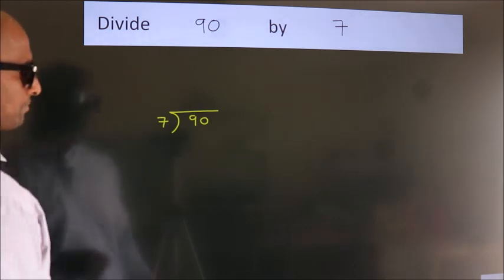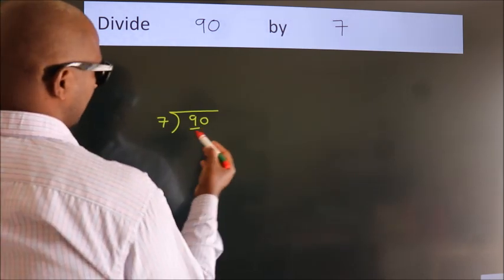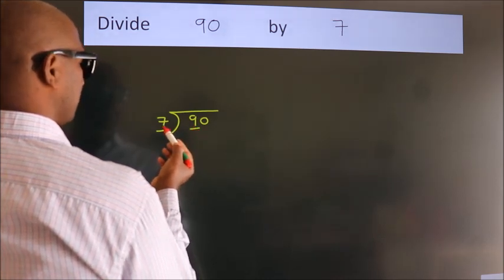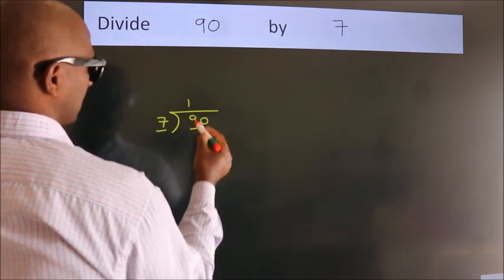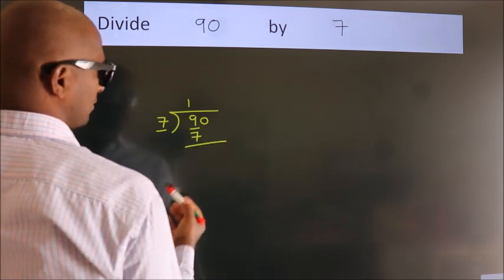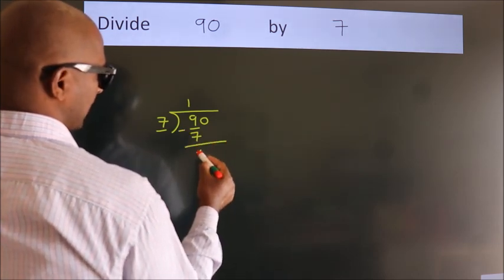Next. Here we have 9, here 7. A number close to 9 in the 7 table is 7 once—7. Now we should subtract. We get 2.